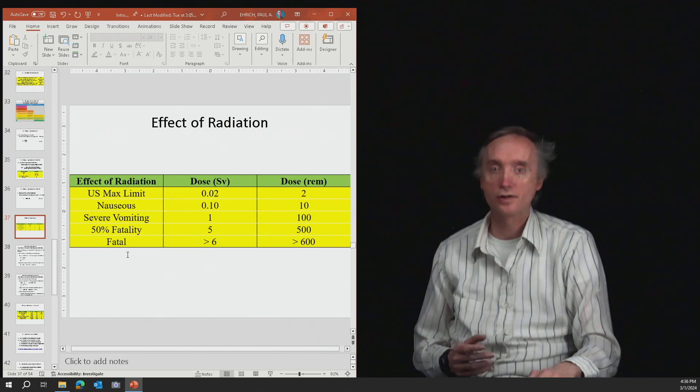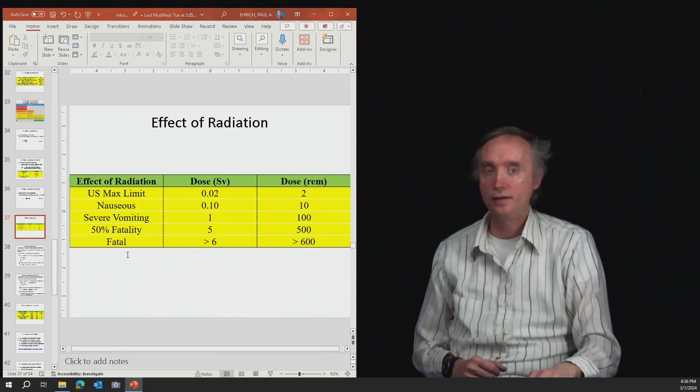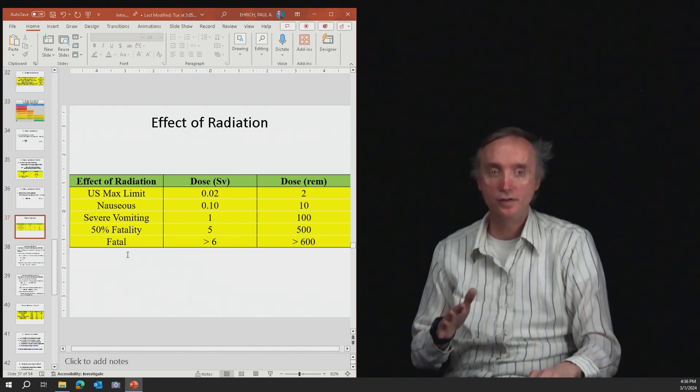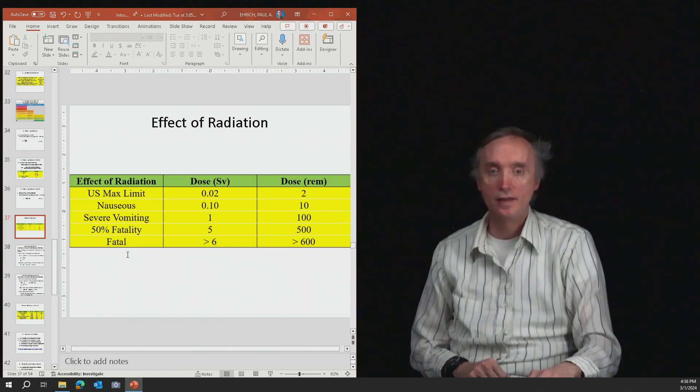If you get one sievert of radiation, you're going to start to throw up. If you get five sieverts, you have about a 50-50 chance of living. And then anything more than six sieverts of radiation, and you're going to die.